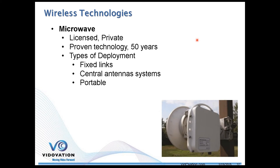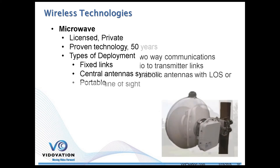A mobile ENG — electronic news gathering — truck typically uses antenna arrays on a tall building in the metropolitan area for the trucks to beam their signal to. So you're out in a remote location, it could be your transmitter tower or a tall building in your metro area, with units moving around and beaming to a central point, or just portable type links.